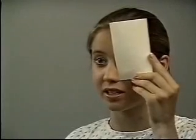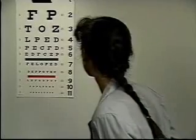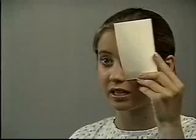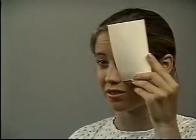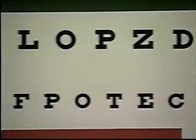Note the visual acuity printed at the side of the line of the eye chart. Ask the patient to try to read the next line. Then repeat the test on the other eye. Remember to record visual acuity using two numbers, such as 20-20, which is normal.